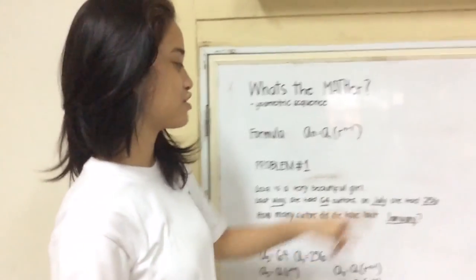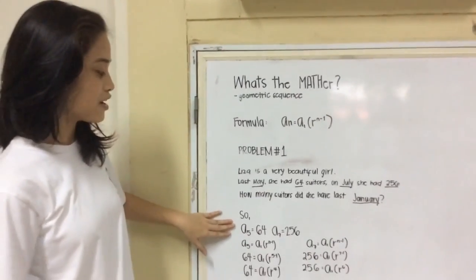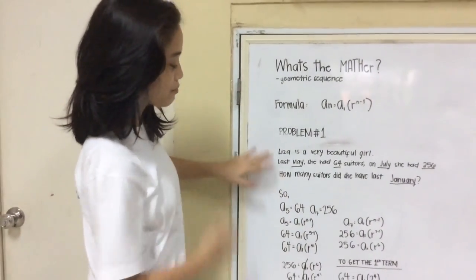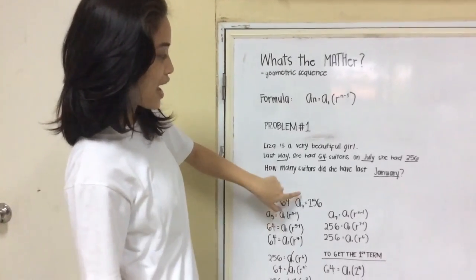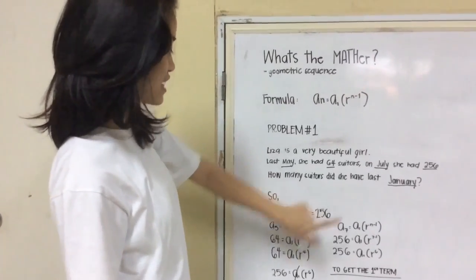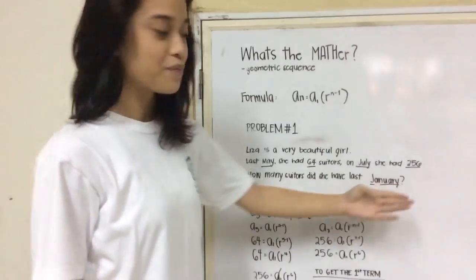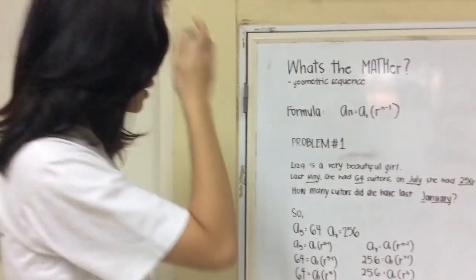May is the fifth month. In July, it's the seventh month. Our given is A5 and A7. So, on May, she had 64 suitors. And on July, she had 256. And we're looking for the suitors she had last January, which is our first term.